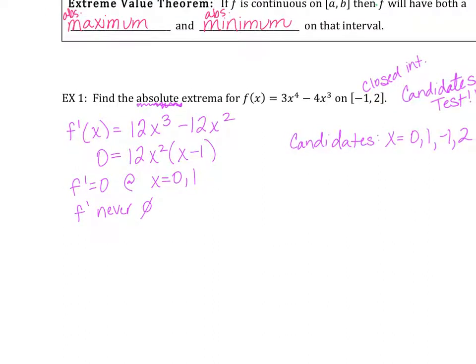That's how I get my candidates: critical points and endpoints. I like to do a T-chart — put all those numbers in. I'm putting all of my candidates and looking at their Y values. The absolute max and min will occur there, so let's find the Y values and just look. It's like lining everybody up to find the tallest or shortest person in the room.